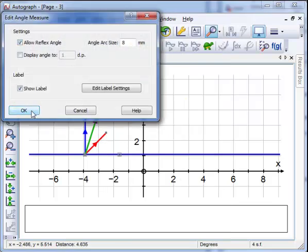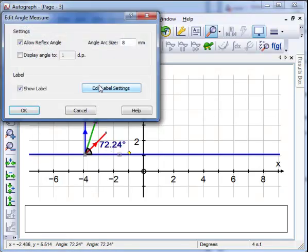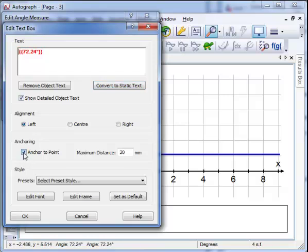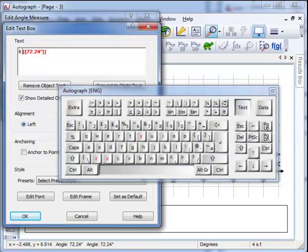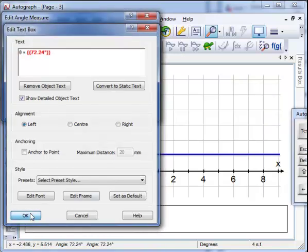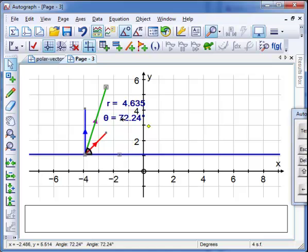Allow reflex, may as well, and there we are. So that's 72.24 degrees. If I double-click on this and edit the settings, I can stop it being anchored to the point, and I can also put theta space equals space. So I've now got theta equals and R equals for this vector.